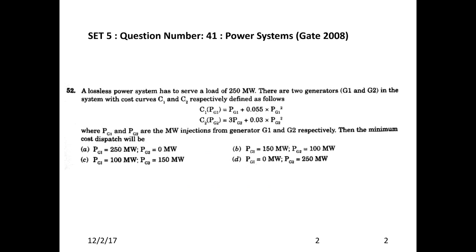First question, asked in the year 2008: A lossless power system has to serve a load of 250 MW. There are two generators G1 and G2 with cost characteristics C1 = PG1 + 0.055·PG1² and C2 = 3·PG2 + 0.03·PG2², where PG1 and PG2 are the megawatt injections from generators G1 and G2 respectively. Find the minimum cost dispatch.